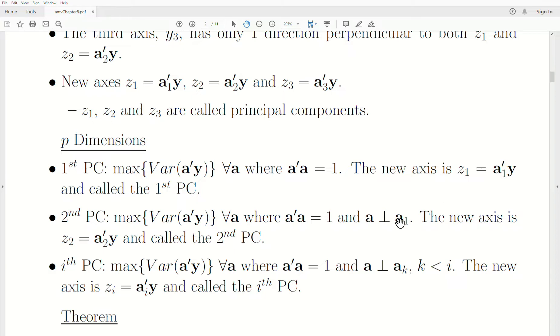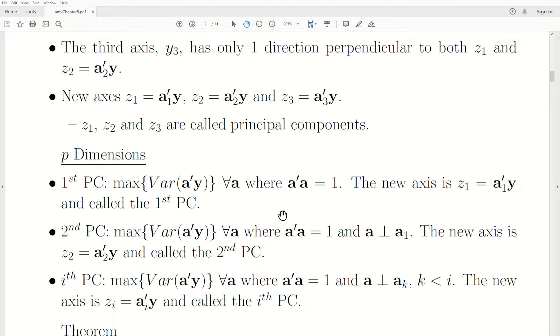In p dimensions, it's exactly the same. The first principal component is the maximum of this variance of the linear combination, where y is a vector of length p. We restrict a to be of length 1, so a'a = I. The new axis is z1 = a'y and called the first PC. In p dimensions, you rotate and tilt in higher dimensions, but there is a direction of maximum variance, and that's called our first principal component.